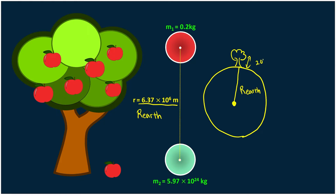We don't account for the height of the tree because the tree may be about 20 meters tall. But when we compare 20 meters with 6.37 million meters, 20 meters is very insignificant. This is why, for objects on the Earth, we just use the radius of the Earth as the distance.